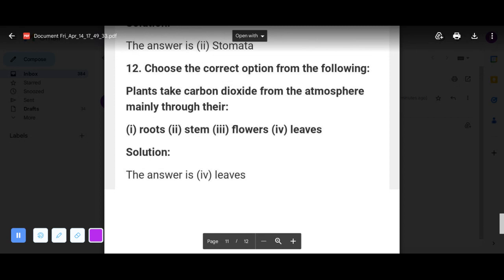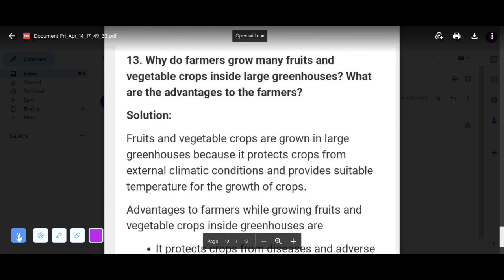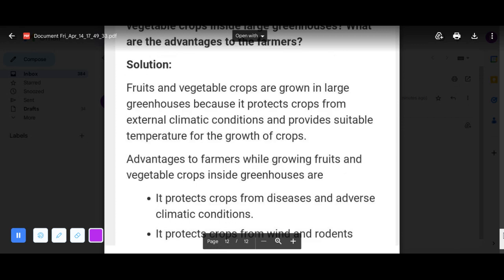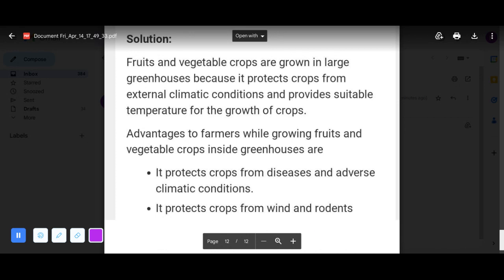Question 13: why do farmers grow many fruits and vegetable crops inside large greenhouses? What are the advantages to the farmers? Fruits and vegetable crops are grown in large greenhouses because it protects crops from external climate conditions and provides suitable temperature for the growth of crops. Advantages to the farmer while growing fruits and vegetable crops inside greenhouses are: it protects crops from diseases and adverse climate conditions. It protects crops from weeds and pests.